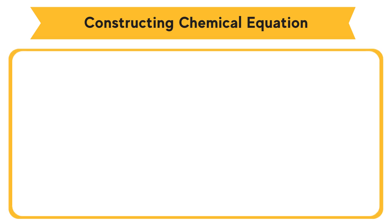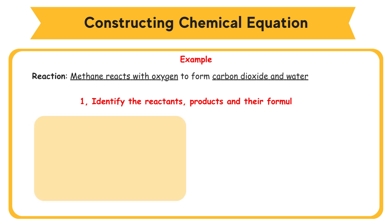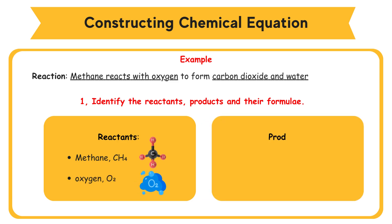Constructing Chemical Equation Example. Reaction: Methane Reacts with Oxygen to Form Carbon Dioxide and Water. Step 1: Identify the Reactants, Products, and their Formulae. Reactants: Methane CH4, Oxygen O2. Products: Carbon Dioxide CO2, Water H2O.